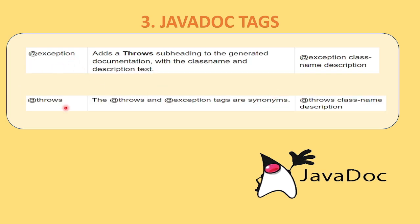Then we have the @exception and @throws tags. These Javadoc tags are used when you use a try-and-catch block inside your Java project. If you use @exception, it will give the class name description — which exception class you have used, that class name and description will be given. And if you use @throws inside your project, it will give a description about the throws class name. They are considered synonyms because they are almost the same, and they are used only when you use try-and-catch to catch or throw exceptions.